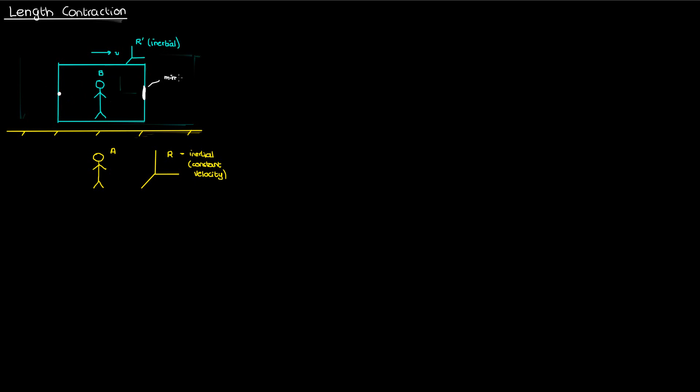Say that I put a source of light on the left edge of the train, and let's also put a mirror that's opposite the source of light on the other side of the train. Let's call this distance the distance between the source of the light and the mirror L0. And L0, also called the proper length, is the distance between the source and the mirror that's measured in the reference frame of the source and the mirror, the moving reference frame R'. We'll see that the length measured in the reference frame R is actually different from L0. That's the whole idea behind length contraction.